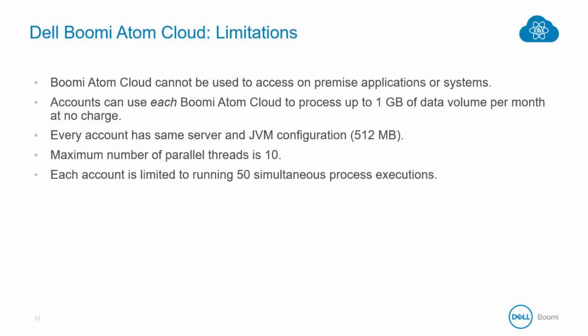There are some limitations of the Boomi Atom Cloud. Probably the biggest one is that the Boomi Atom Cloud cannot be used to access on-premise applications or systems, and the Atom Cloud does not support IP tunneling into your secured applications. It's worth repeating that accounts can use each Boomi Atom Cloud to process up to one gigabyte of volume per month at no charge, but you will be charged if you exceed that limit. Every account has the same server and JVM configuration. The maximum number of parallel threads is 10, and each account is limited to running 50 simultaneous process executions in the production Atom Cloud.